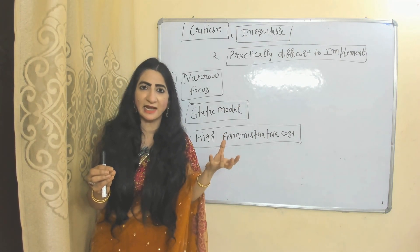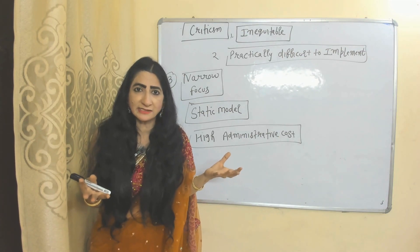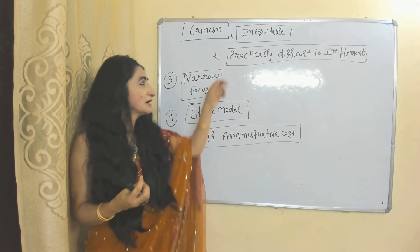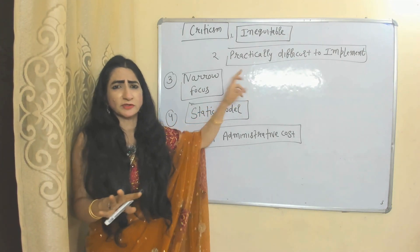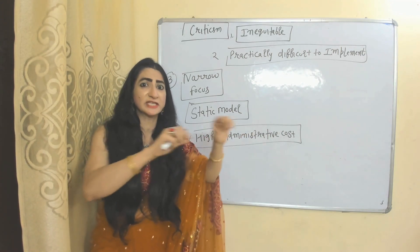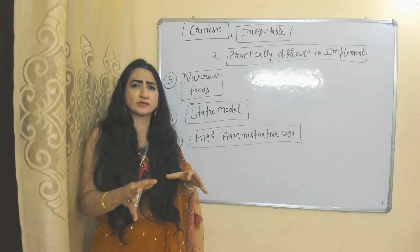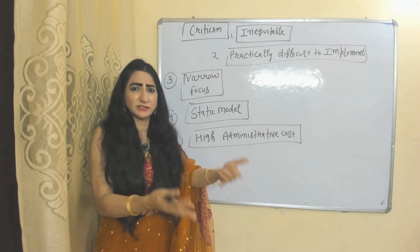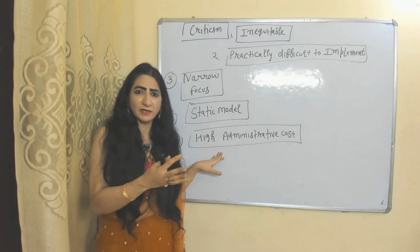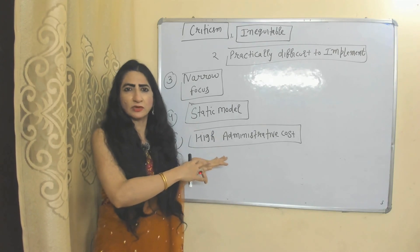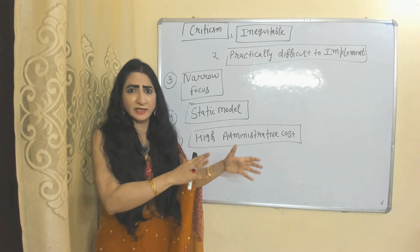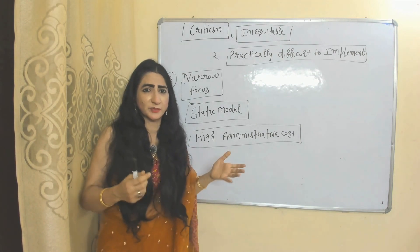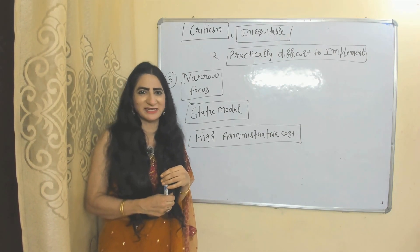Criticisms of the Ramsey Rule: First, it is inequitable — this rule says the government should impose higher taxes on inelastic goods, but demand for food is inelastic, and food is a basic requirement of poor people. Second, it is practically difficult to implement because it is not possible to measure the elasticity of demand for each and every good. Third, it has a narrow focus — it only focuses on minimizing deadweight loss and ignores other factors. Fourth, it is a static model that doesn't account for all factors influencing tax rates, and implementing it would increase administrative costs. Thank you so much for watching this video. Bye, take care.